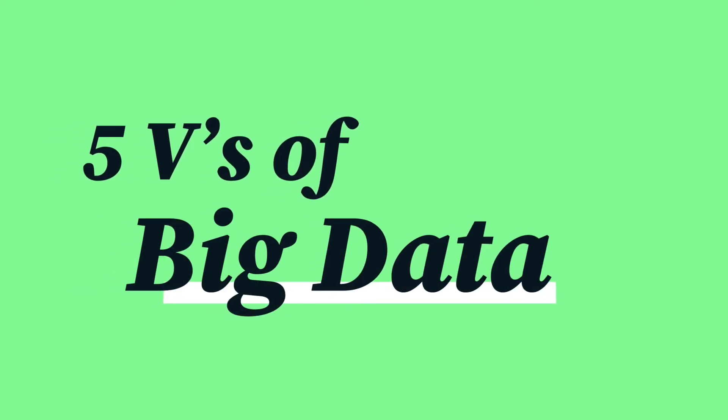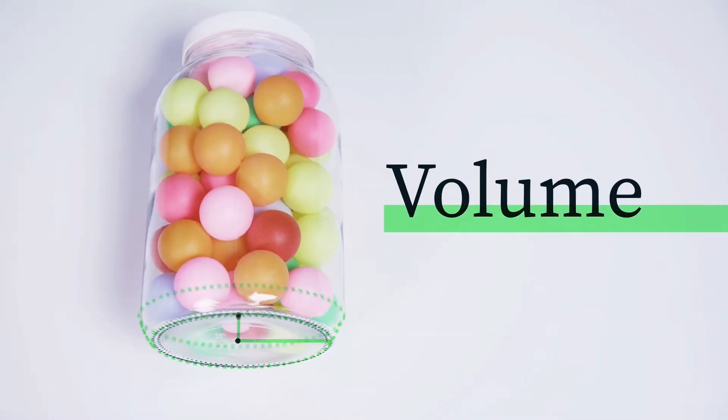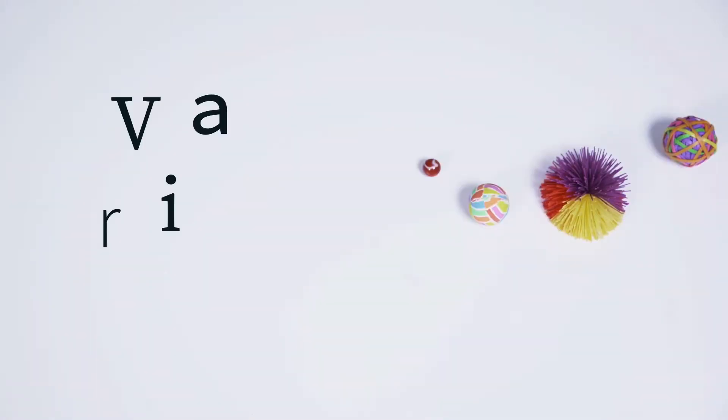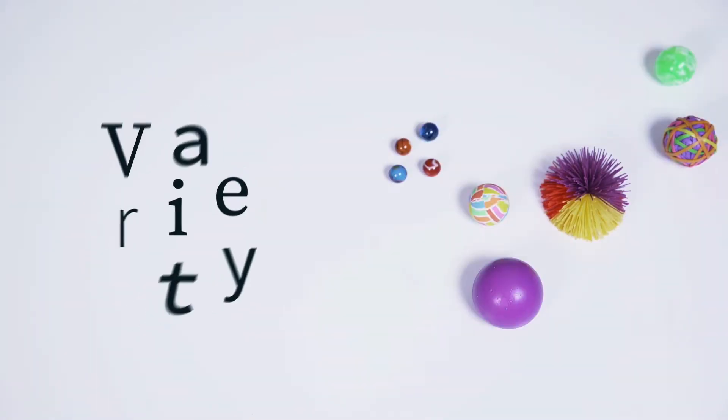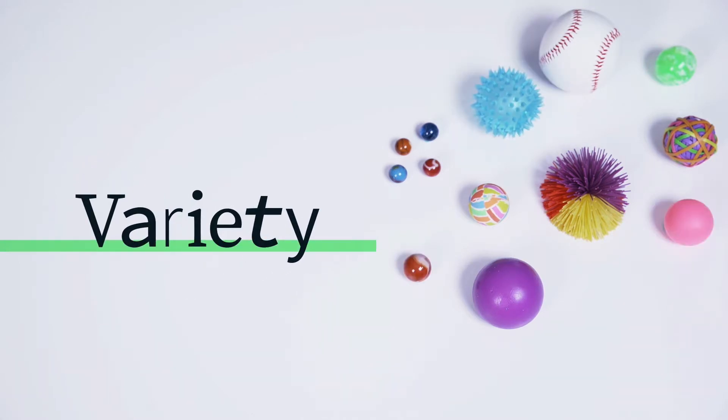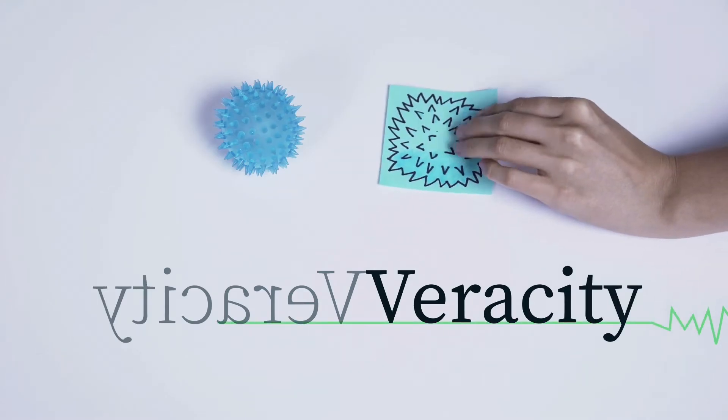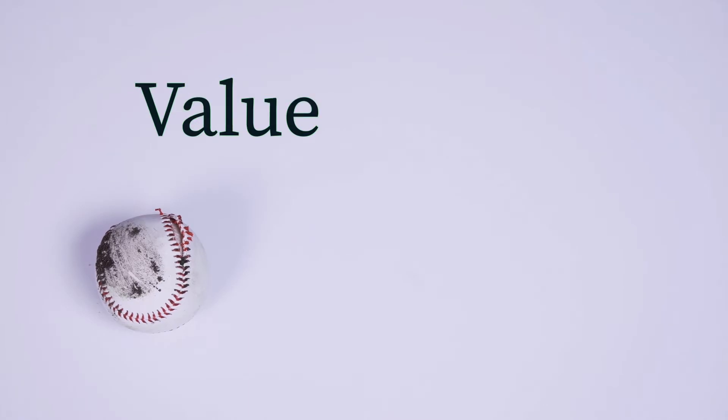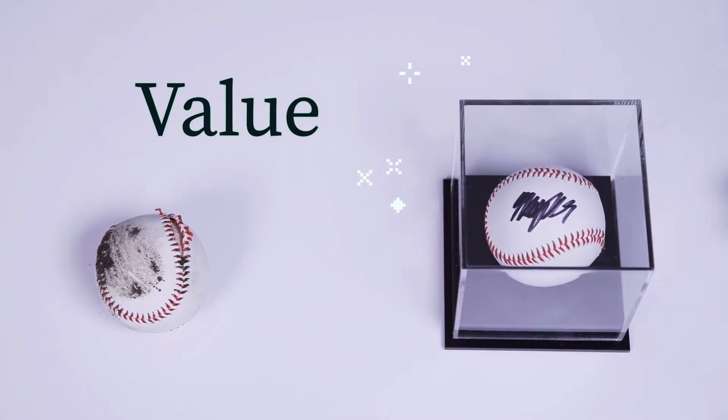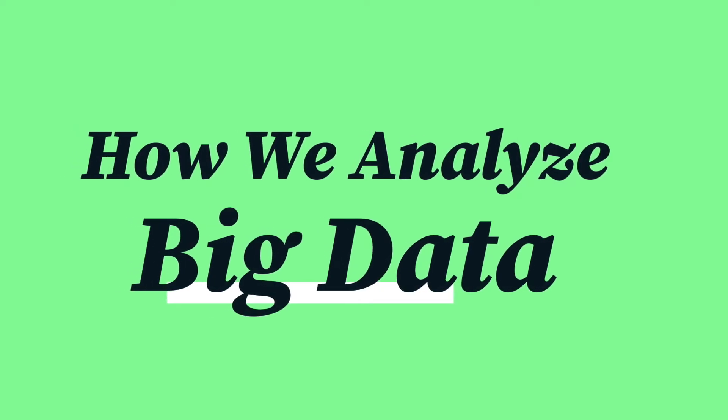Big data is described with what we call the five Vs. Volume is a dimension that refers to the sheer amount of data. The second V is variety, which describes the diversity of individual pieces of data within a set. Velocity describes the speed at which data is produced. Veracity is a dimension that refers to the accuracy or quality of the data. And value, the fifth V, describes the extent to which the data is unique and meaningful.